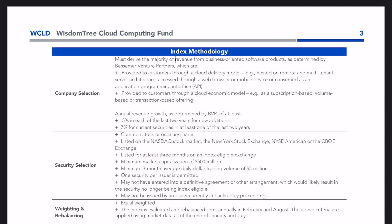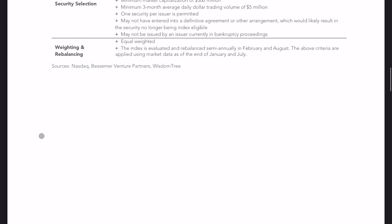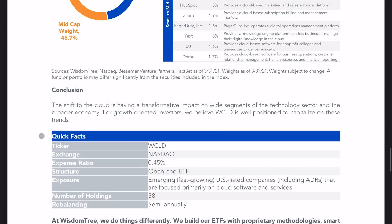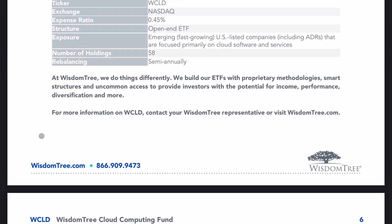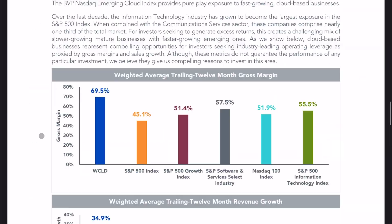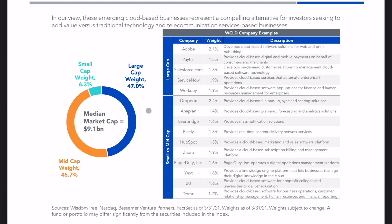This is the index methodology — you can pause it to read, and I'll leave the link in the description below. The last thing I wanted to show was the market cap weighting of this ETF. We can see it's split pretty evenly between large and mid-cap cloud computing companies, with a little bit of small-cap exposure. Here's an example of how it's structured.